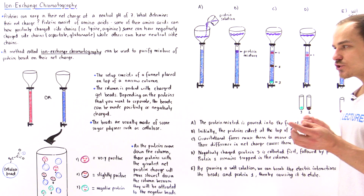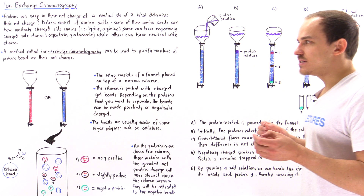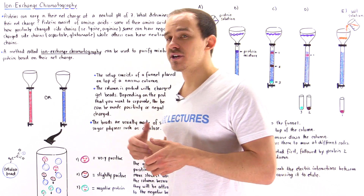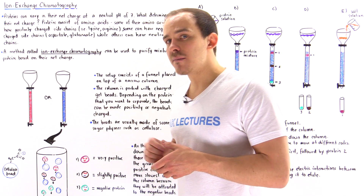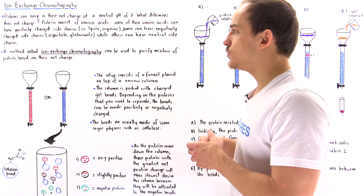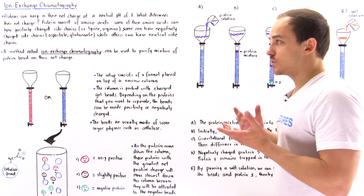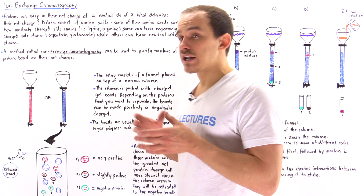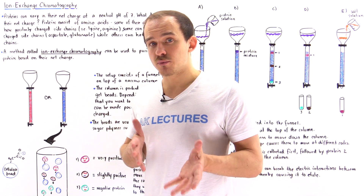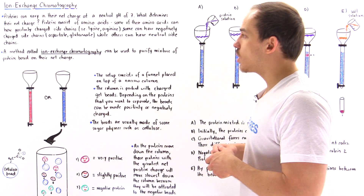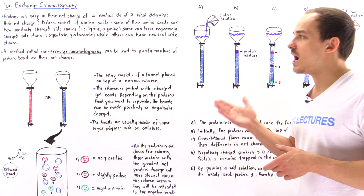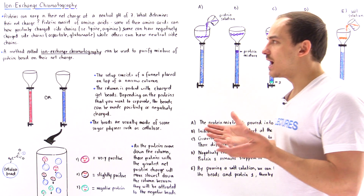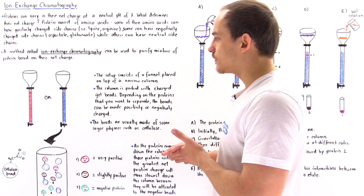Because certain proteins differ from one another based on their net charge, this is another property we can use to separate and purify proteins. The method we use to separate proteins based on net charge is called ion exchange chromatography, or simply ion chromatography.